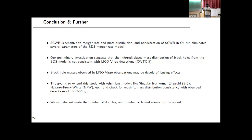In future work, our goal is to extend our studies using additional lensing models such as the SIE and NFW lens models, obtaining mass distributions and comparing them with LIGO-Virgo detections. We will also calculate the number of doublets and lensed events to make our results more concrete. Overall, gravitational wave lensing is something we expect to observe in the future or the coming decade, but as of now, lensing effects are not present in the LIGO-Virgo detections.